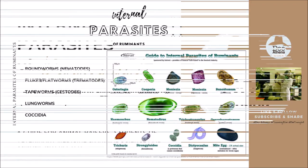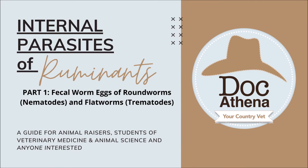This lecture series will be divided into two parts. For the first lecture, we will be discussing the roundworms or nematodes and the flukes or flatworms or trematodes. Roundworms or nematodes would include the stomach worms or abomasal worms, the small intestinal worms, and large intestinal worms.